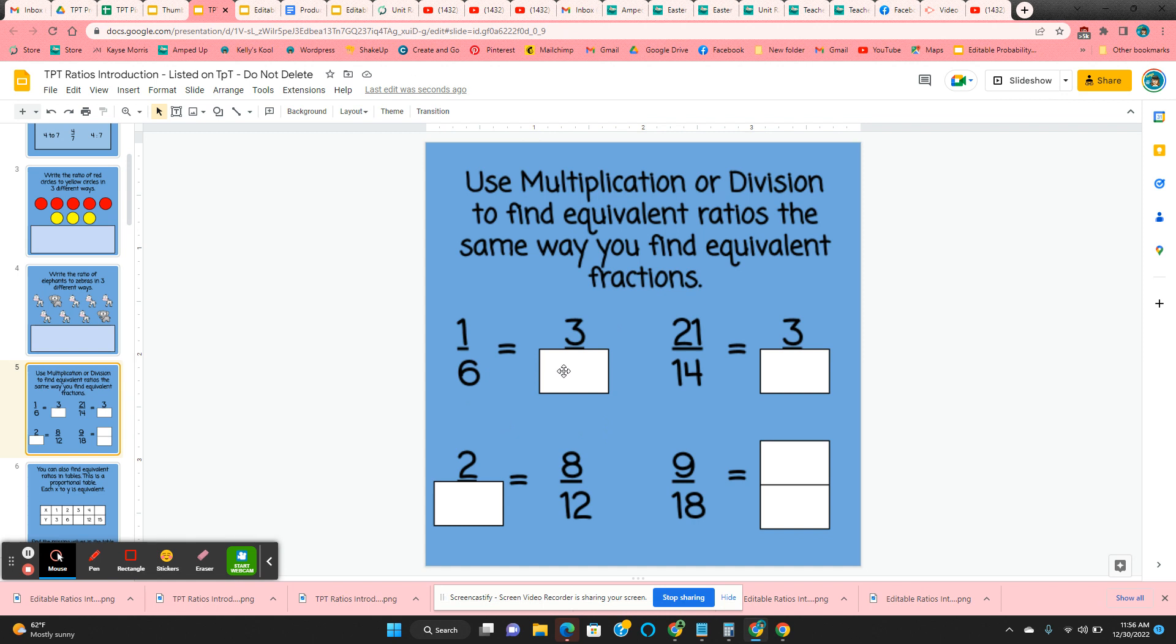So here they would multiply by three. This would have to be 18. Divide by seven. This would have to be two, and then the very last one they can either multiply or divide. So there could be various answers there.